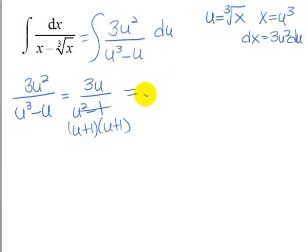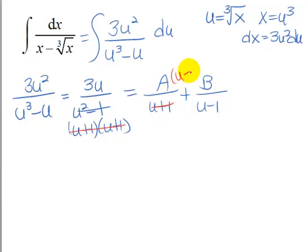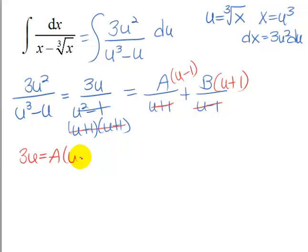And our partial fractions then, we're going to need one denominator u plus 1 and one that's u minus 1, and our numerators will be A and B. So as we clear this of fractions, this one will need the u minus 1 and this one will cancel and leave us the u plus 1. So we have 3u equal A multiplied by u minus 1 plus B multiplied by u plus 1.